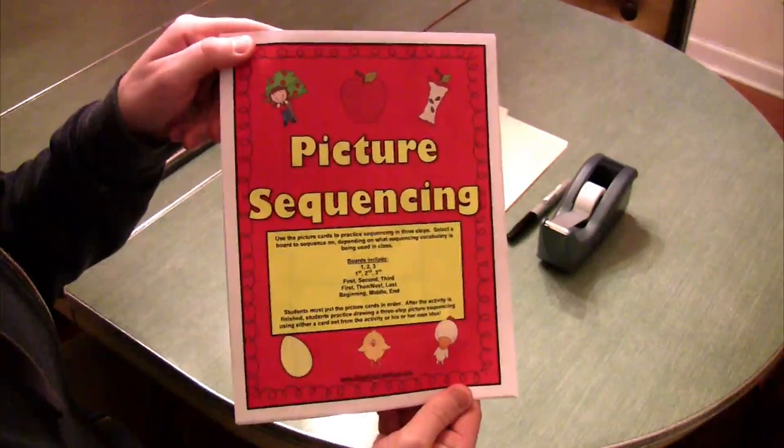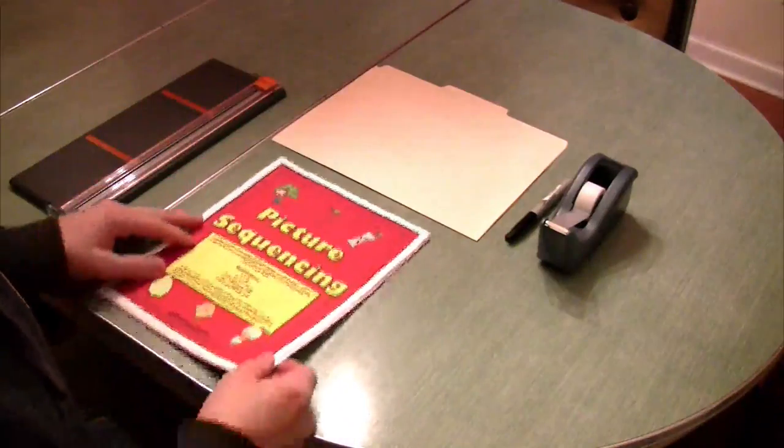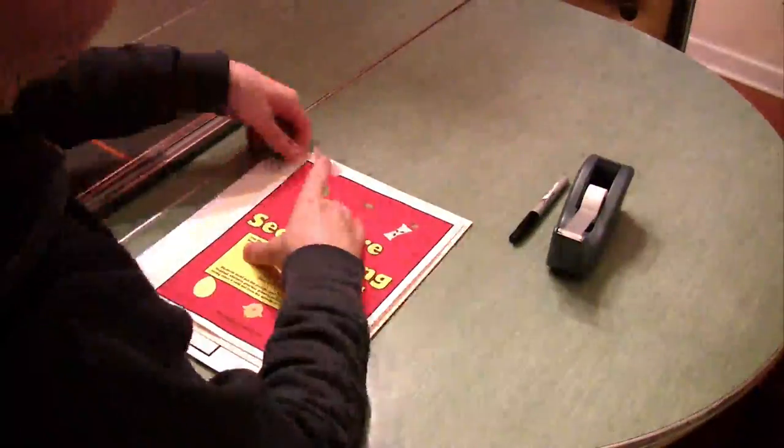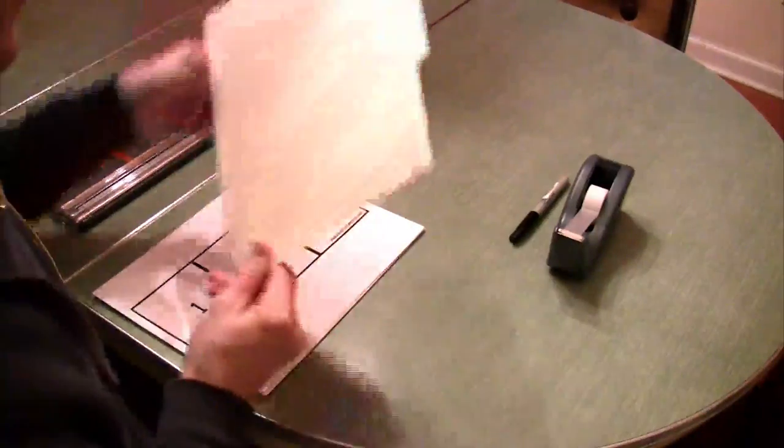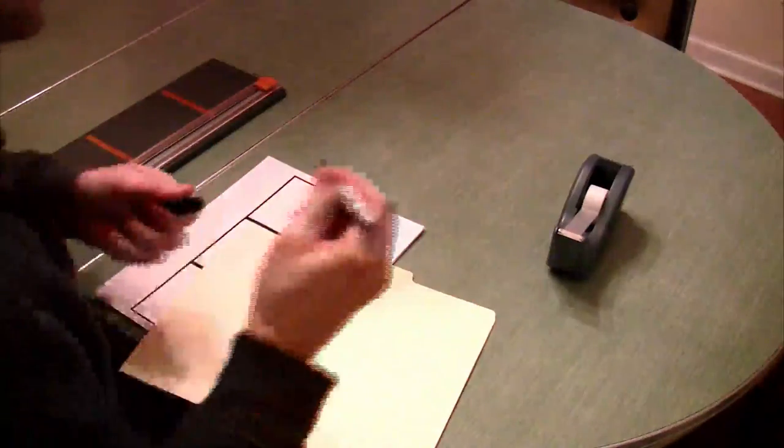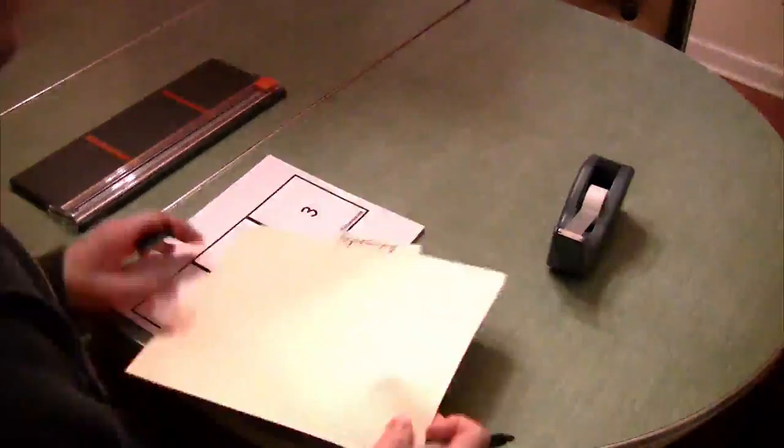This activity center is perfect for a classroom. We're going to take the cover page, tape it right onto a manila folder. Inside this folder, you can keep all of the contents of the center. And to stay organized, we're going to label it sequencing.